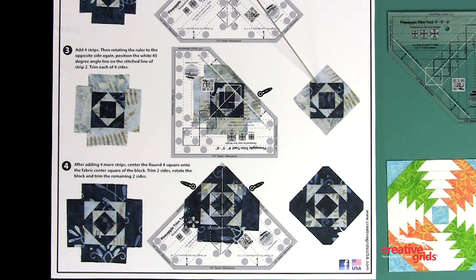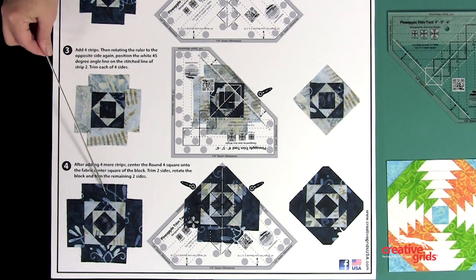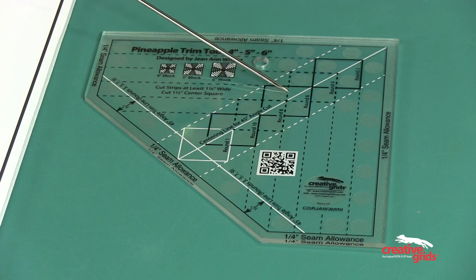Moving on to round four, add your four strips, center the round four square over the center of the block, and trim as before.